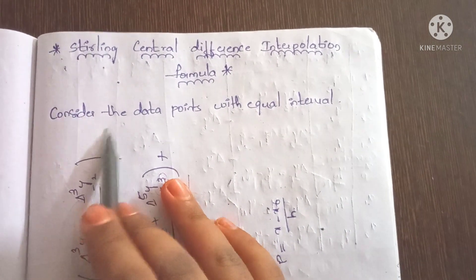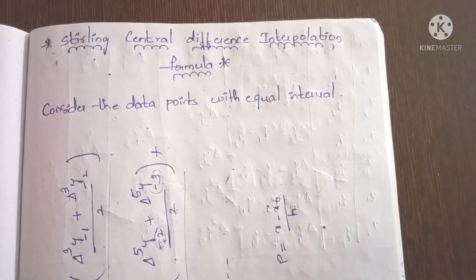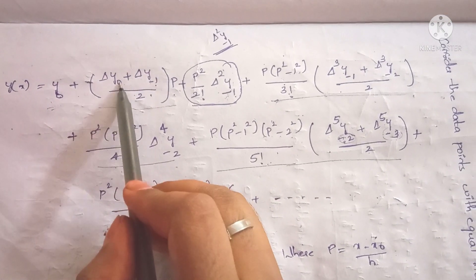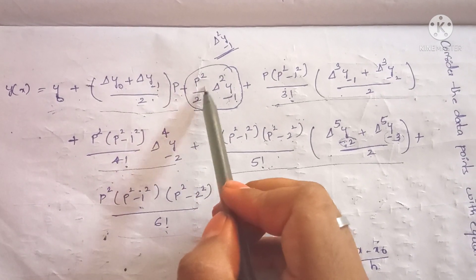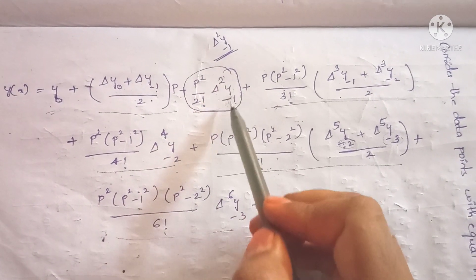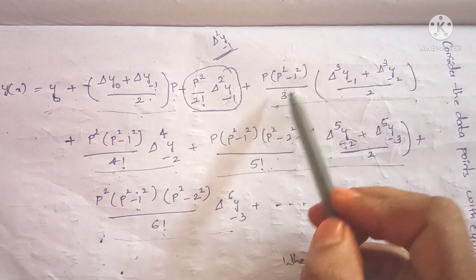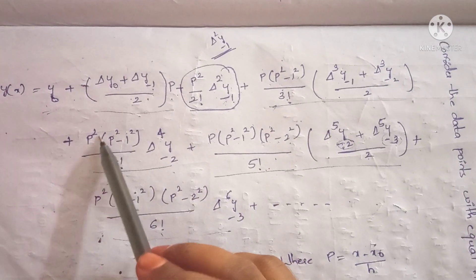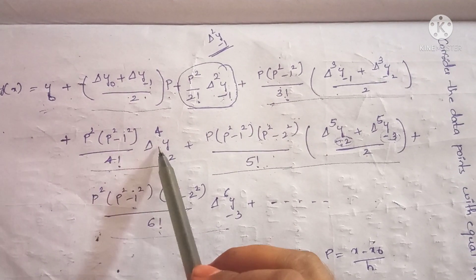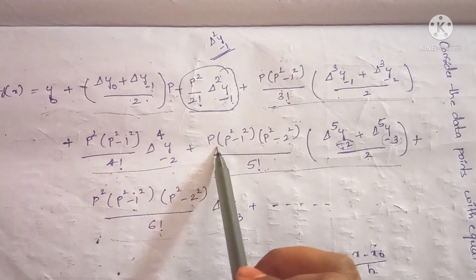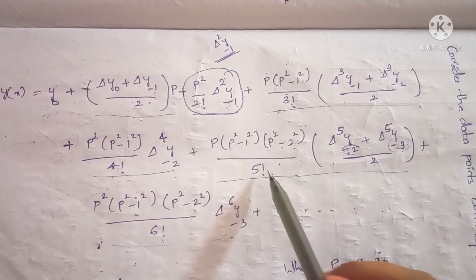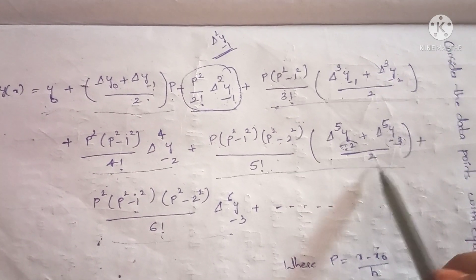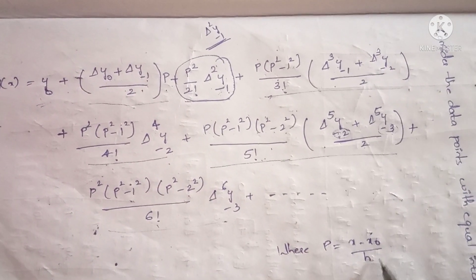First, consider the data points with equal interval. The central difference interpolation formula is: y(x) = y₀ + p·Δy₀ + (Δy₋₁)/2 · (p + p²/2!) · Δ²y₋₁ + p(p²-1²)/3! · (Δ³y₋₁ + Δ³y₋₂)/2 + p²(p²-1²)/4! · Δ⁴y₋₂ + p(p²-1²)(p²-2²)/5! · (Δ⁵y₋₂ + Δ⁵y₋₃)/2 + ..., where p = (x - x₀)/h.